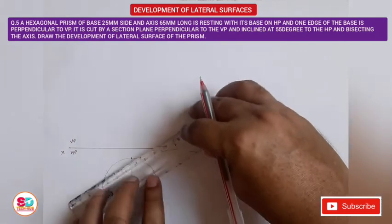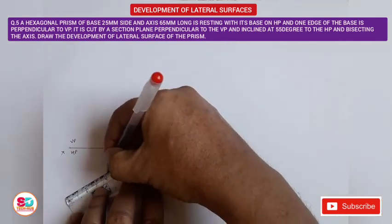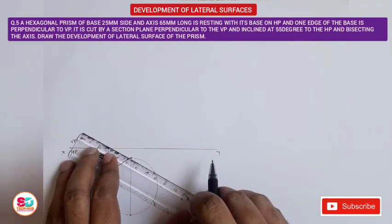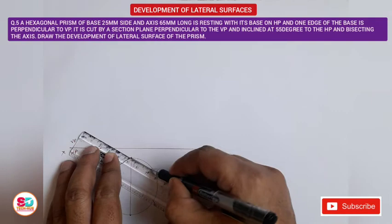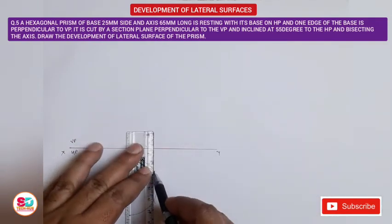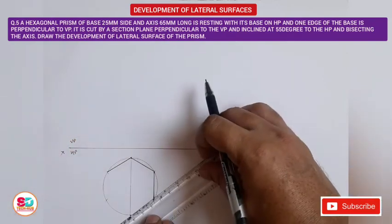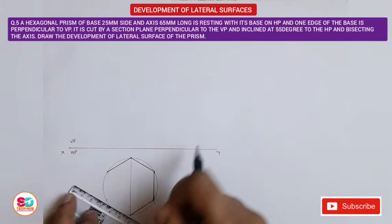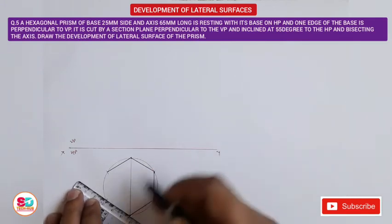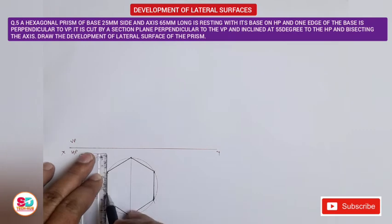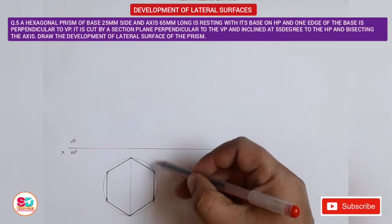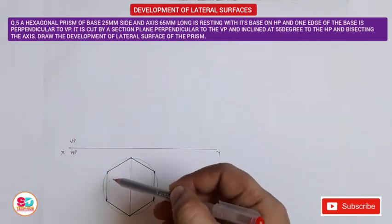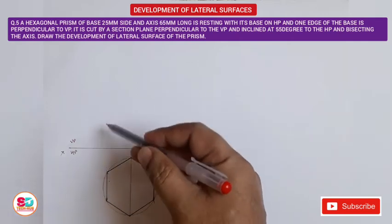We join all six points on the circle to complete the top view of the hexagonal prism. The condition given in the problem is satisfied — these two base edges are perpendicular to the XY line or the vertical plane.